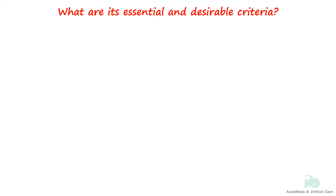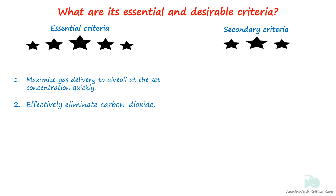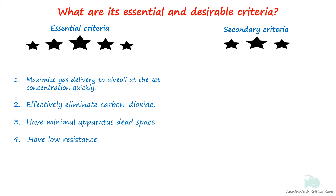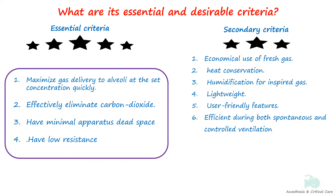The breathing system must perform certain important functions. Some of these are must-have while others are desirable. Essentially, the breathing system must efficiently transport gases from the machine to the alveoli at the desired concentration and in the shortest time possible. Secondly, it should effectively remove carbon dioxide. Thirdly, it should minimize apparatus dead space and maintain low resistance. In addition to these primary criteria, there are other desirable requirements for your reading pleasure.